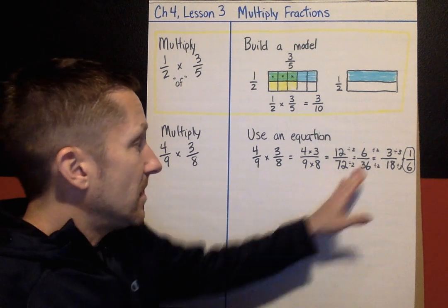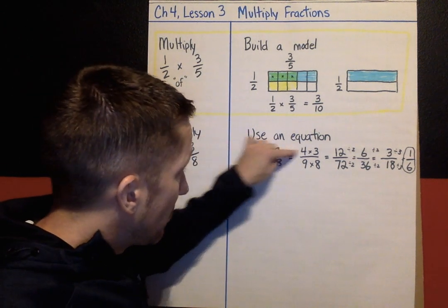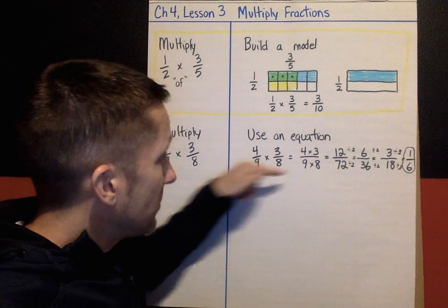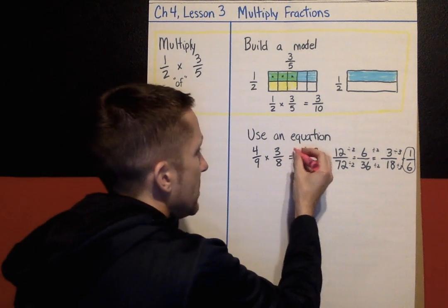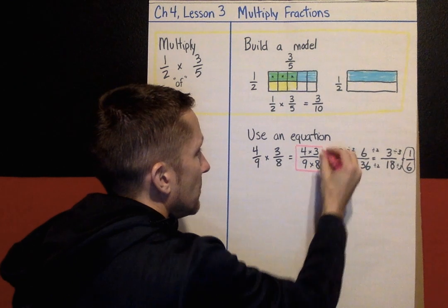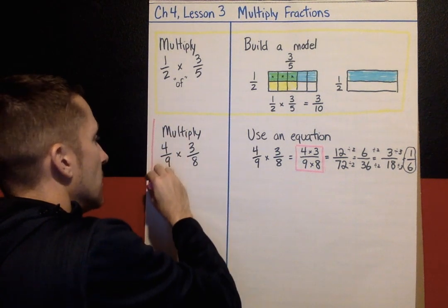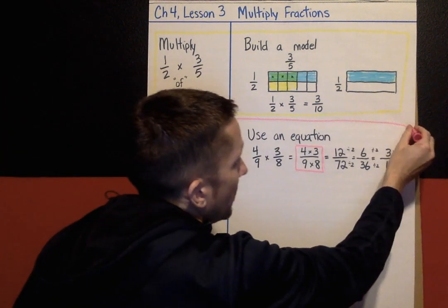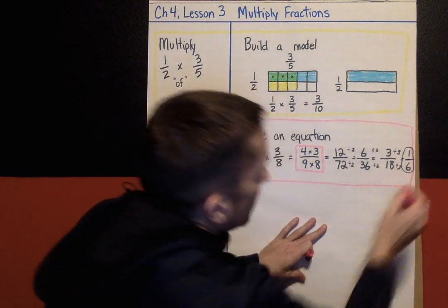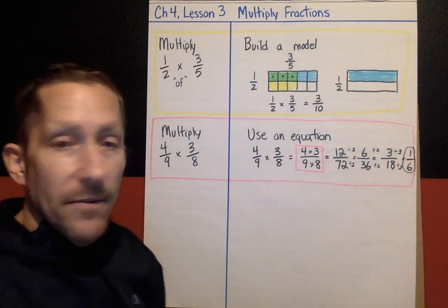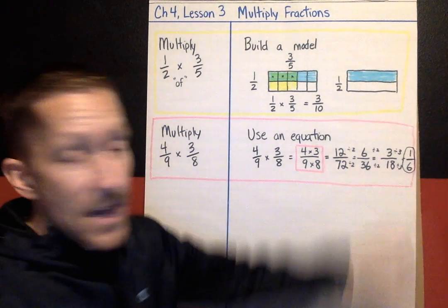So a lot of simplifying on this problem. The big idea is: if you're using an equation, you just multiply across — numerator times numerator over denominator times denominator. Then you may have simplifying to do. I'm going to highlight this and put a rectangle around this strategy: 'use an equation.'